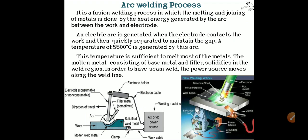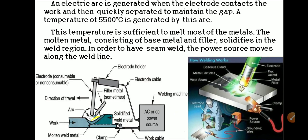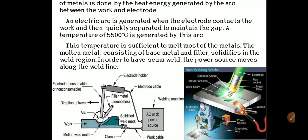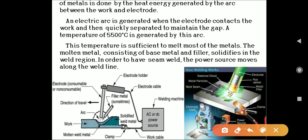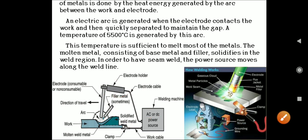Looking at the figure, we can see the power supply — an AC or DC power supply source is provided with two cables. One cable is connected to the electrode holder and another cable is provided to hold the workpiece with the help of a clamp. The electrode cable is connected with the electrode holder, which holds the consumable or non-consumable electrode. Filler metal is also sometimes used, as shown in the diagram.